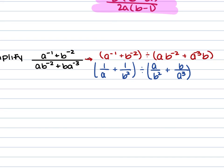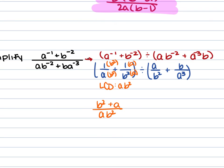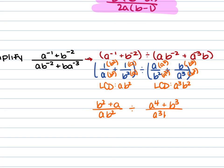Find the least common denominator between each set of parentheses. From the first set, the LCD is ab squared. Multiply the first fraction by b squared top and bottom, and the second fraction by a top and bottom, giving (b squared plus a)/(ab squared). From the second set, the LCD is a cubed b squared. Multiply the first fraction by a cubed top and bottom, and the second by b squared top and bottom, giving (a to the 4th plus b cubed)/(a cubed b squared).